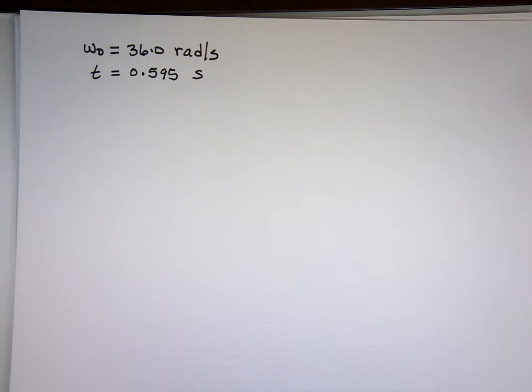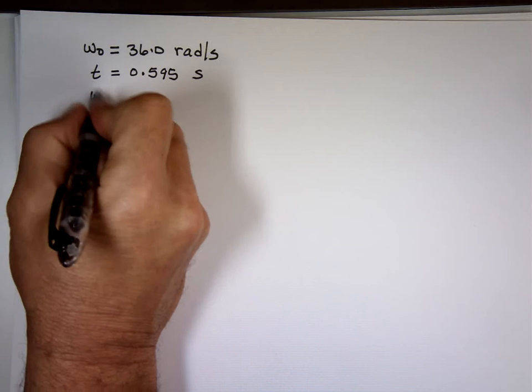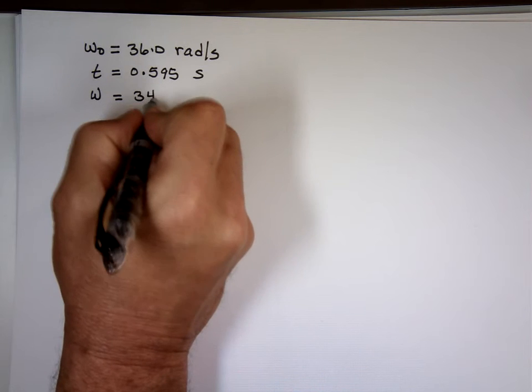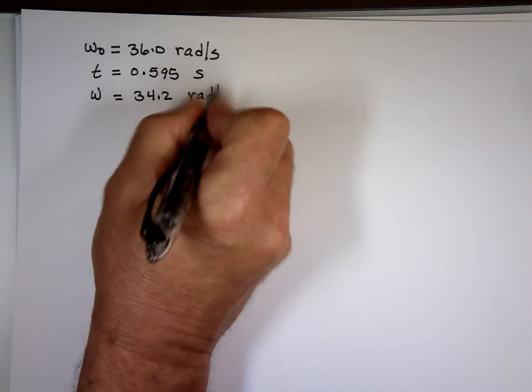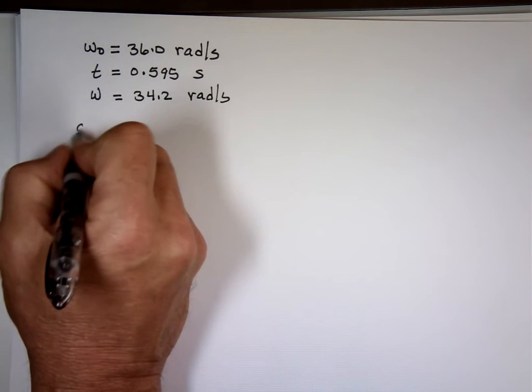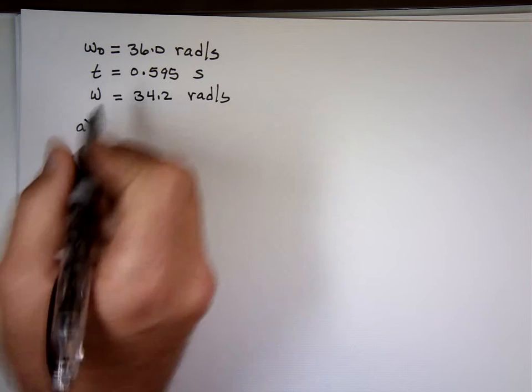The ball gets to home plate 0.595 seconds later. The ball's angular speed by the time it gets to the catcher has reduced. Why? Why would it be reduced? Before he caught it, how about the air resistance? The wind. So slowing it down. So the final angular speed is a little bit lower, 34.2 rad per second. Friction, air resistance. And the question is, question A, can you tell me what the angular acceleration is?